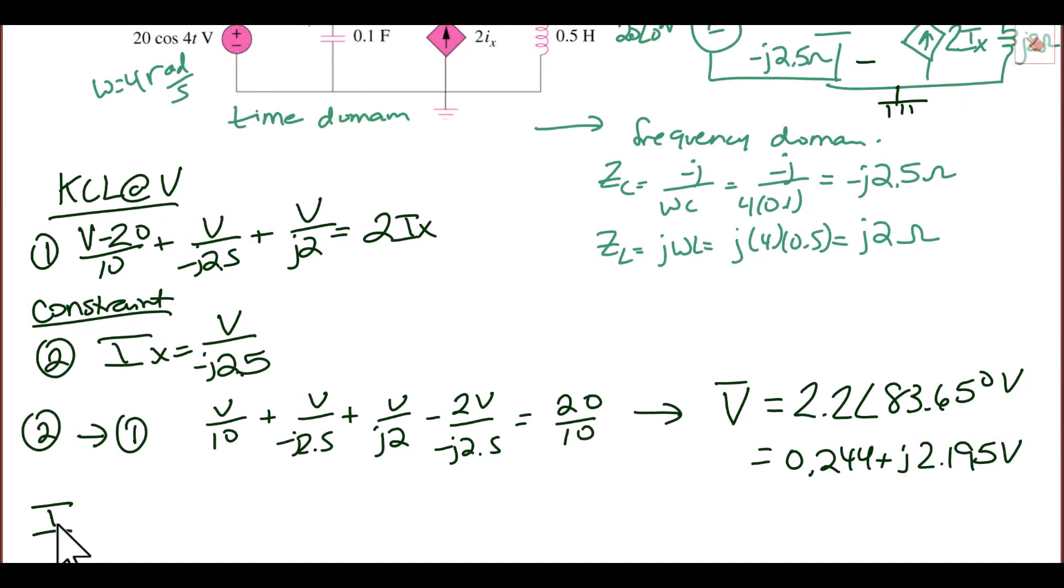So IX is equal to V over negative J 2.5, and now that we know what V is, we can find IX and we get that IX is equal to 0.883 with an angle of 173 degrees, and the units are amps. In the time domain we would have that IX of t is equal to 0.883 cosine 4t plus 173 degrees.